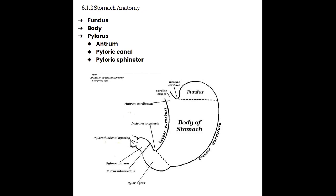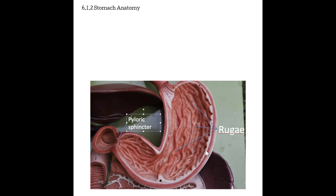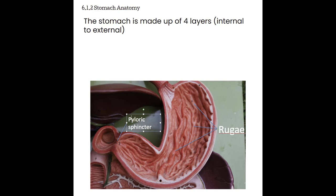If we take a closer look at the wall of the stomach, we will see that there is a very muscular layer with three layers of muscles: longitudinal muscles, circular muscles, and oblique muscles. These muscles allow the stomach to peristalse, churning the food and helping to start breaking it down through the hydrochloric acid in the stomach. But the muscle layer is only one layer. There are four layers making up the stomach wall. Moving from inside to outside: the mucosa, the submucosa, the muscularis layer with those three muscle layers, and then the serosa.